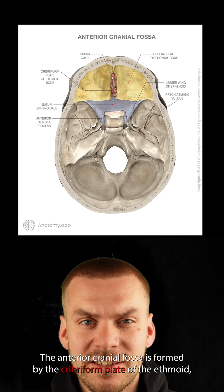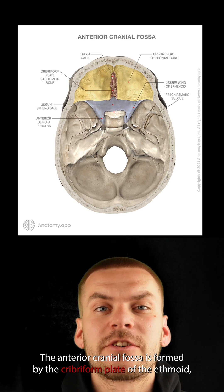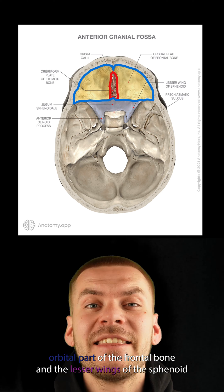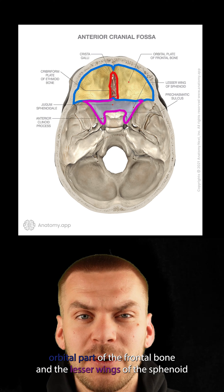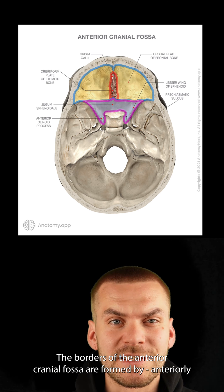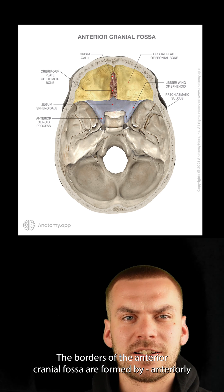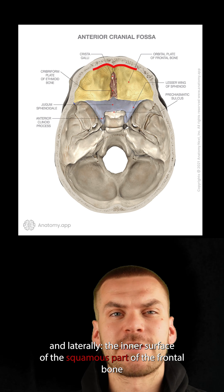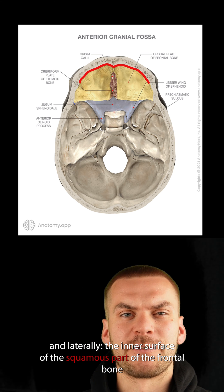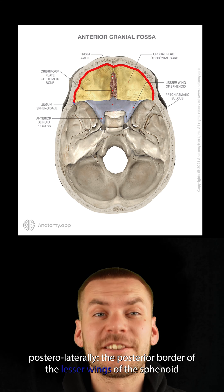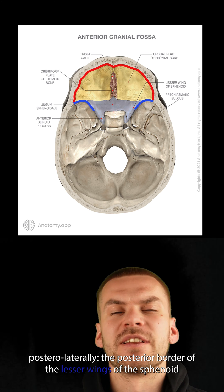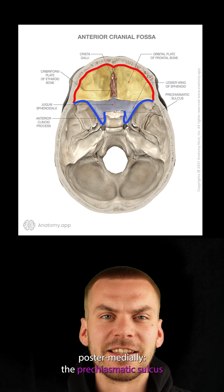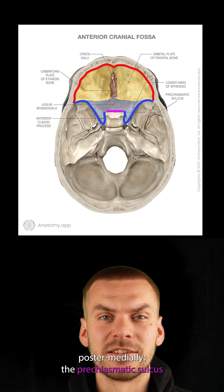The anterior cranial fossa is formed by the cribriform plate of the ethmoid bone, orbital part of the frontal bone, and the lesser wings of the sphenoid bone. Its borders are formed anteriorly and laterally by the inner surface of the squamous part of the frontal bone, posterolaterally by the posterior border of the lesser wings of the sphenoid, and posteromedially by the pre-chiasmatic sulcus.